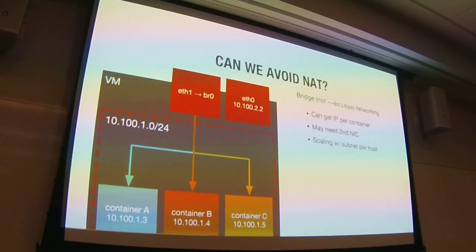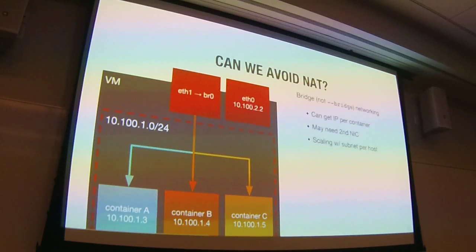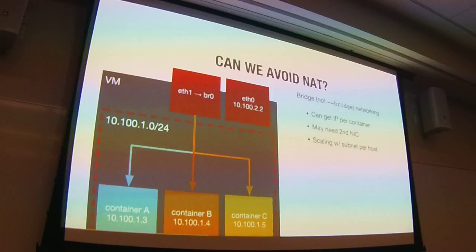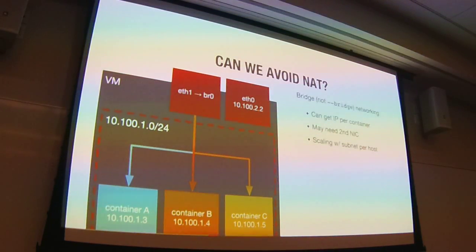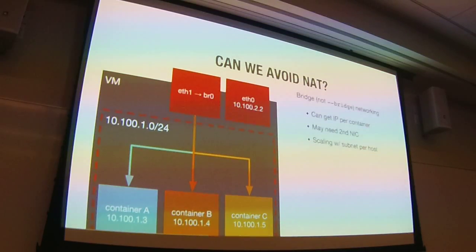In some environments you might need a second NIC to do this with certain cloud providers. In Kubernetes, generally what you end up with is a subnet per host as a way of doing IP namespacing, which creates some scaling issues. This isn't bad though — it's actually the closest you can get to OpenSolaris Crossbow or vSwitch with Linux alone.